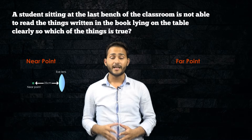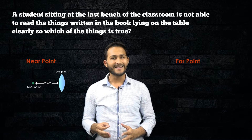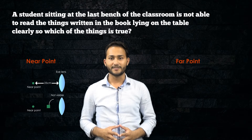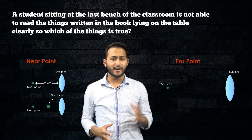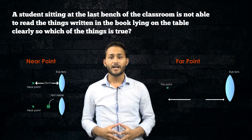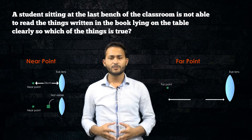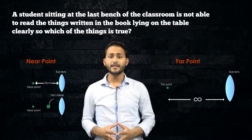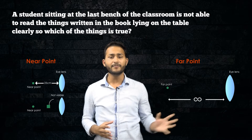An object kept at a distance of lesser than 25 centimeters — the person will not be able to see it clearly. The far point is actually the farthest point up to which a person can see. In the case of a normal eye, it is infinity, meaning a person can see all the objects kept at infinity also.